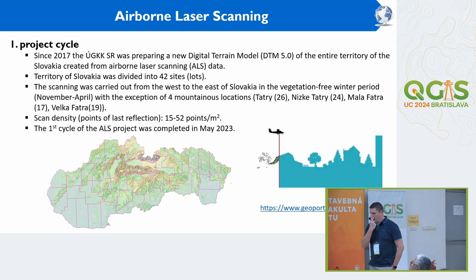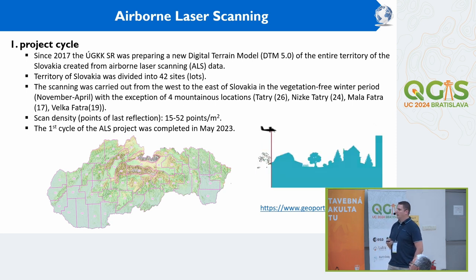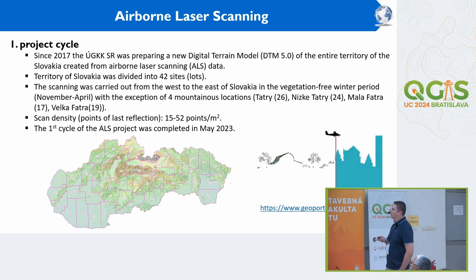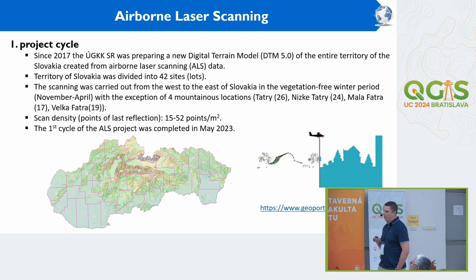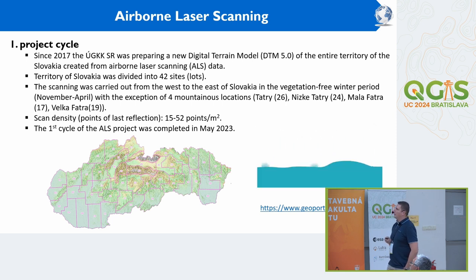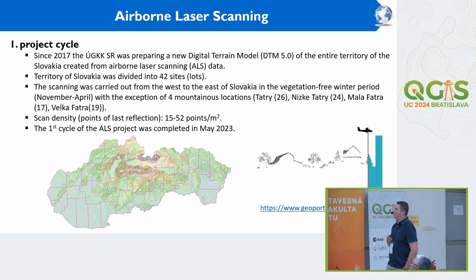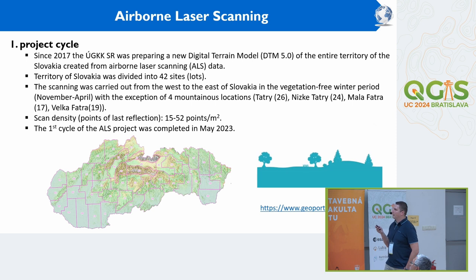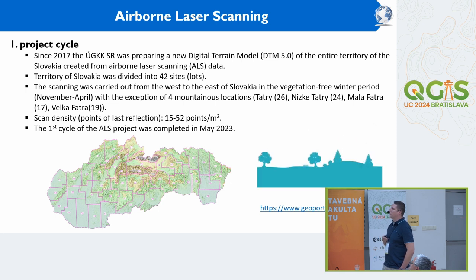Scanning was made in the non-vegetation period in winter, because vegetation can be an obstacle in laser scanning. Only the most high mountainous locations — Tatra, Malá Fatra and Nízke Tatry — were scanned also in summer because of snow cover. In the first cycle, scan density was 15 to 52 points per square meter, which was quite a good result.